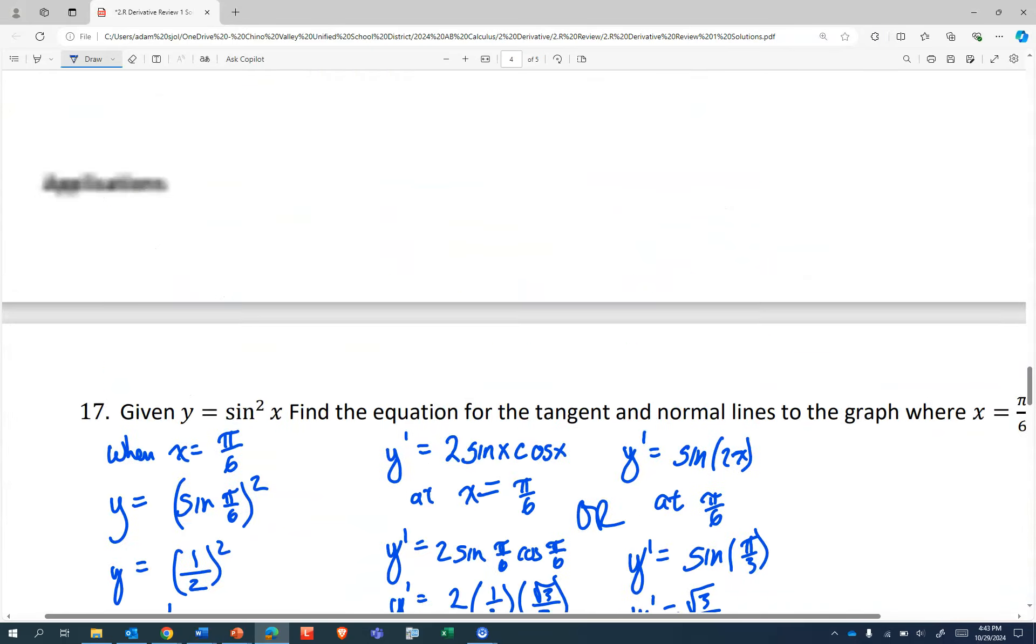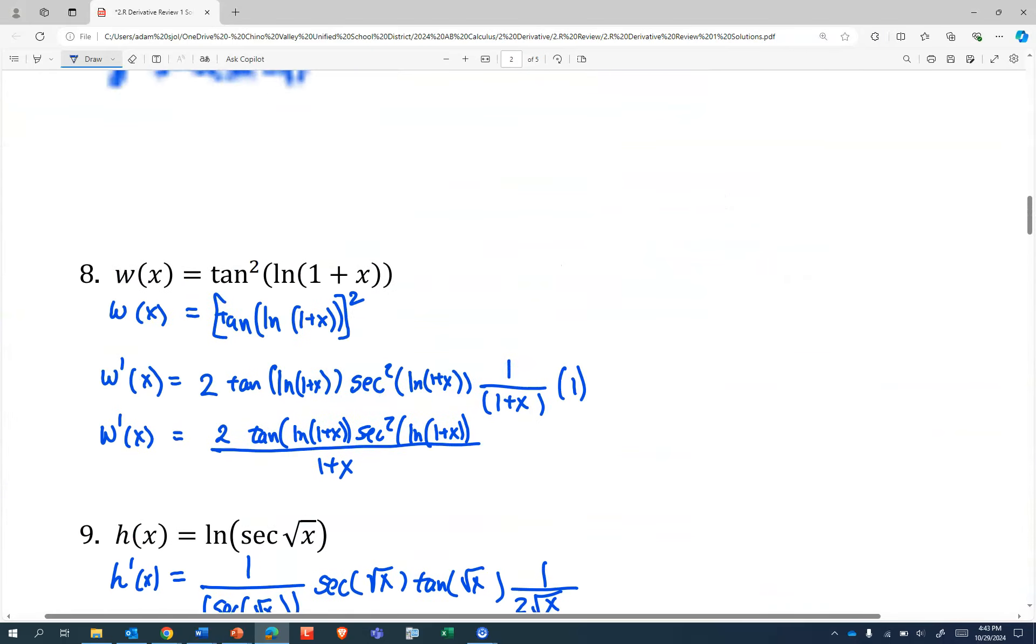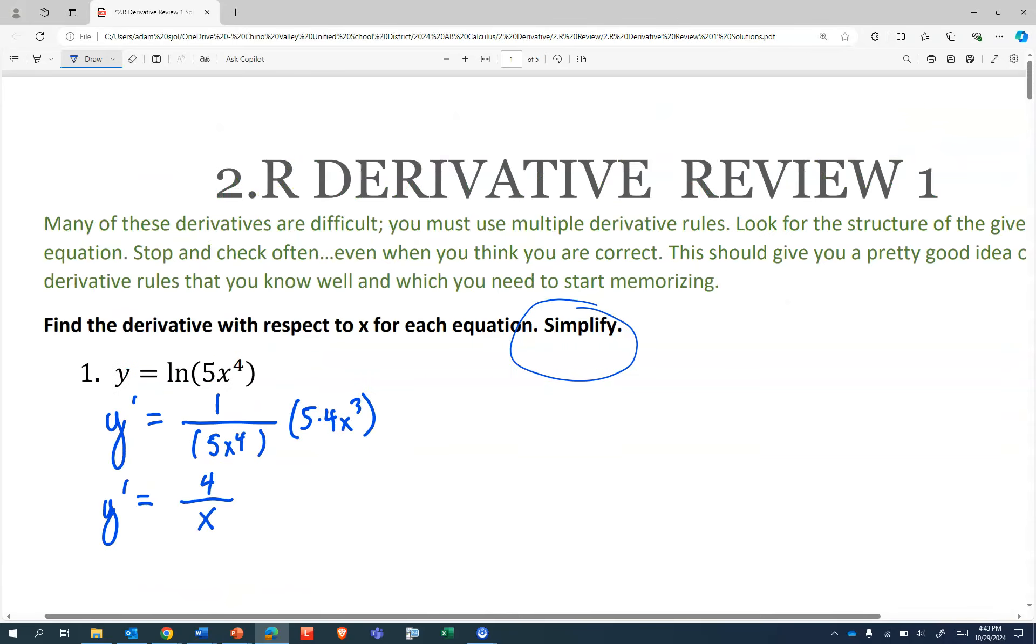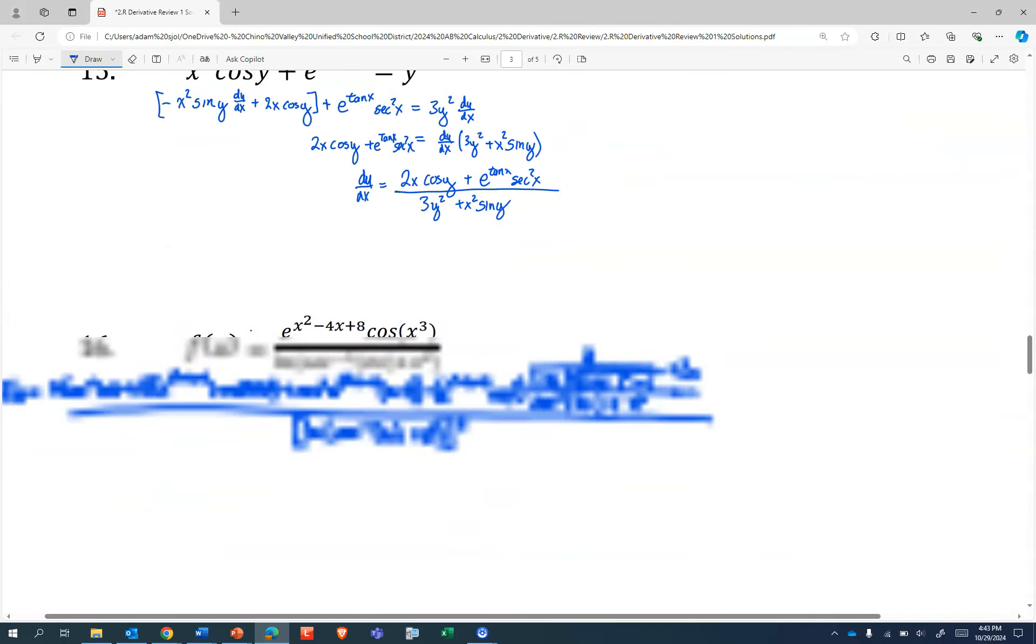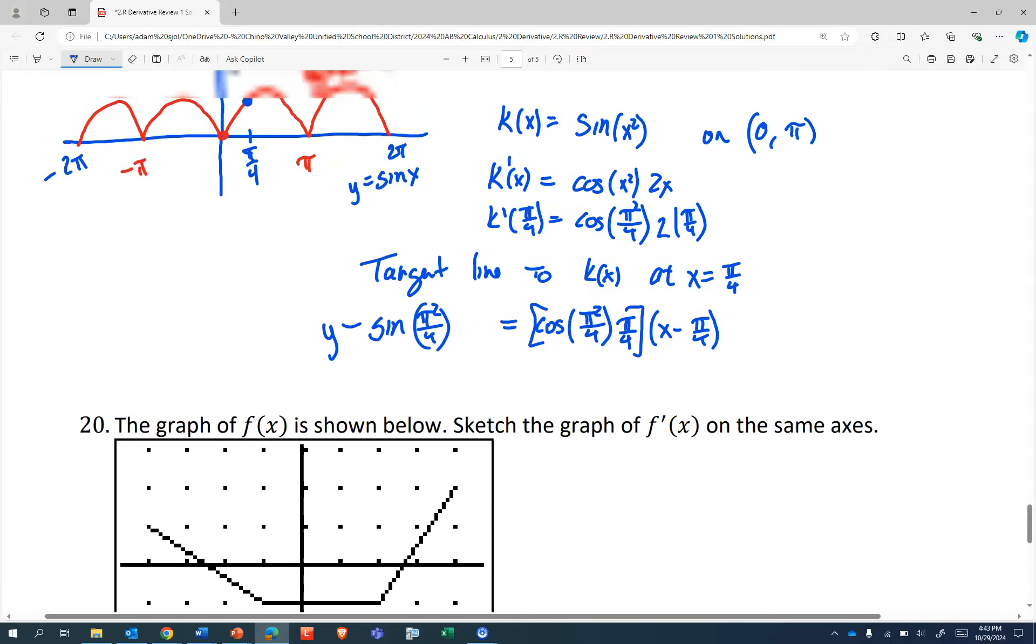I guess we just replace this stuff. And then that's π/2. This whole thing is our slope. Times x minus π/4. And k(x) is sin(x²), so this is just going to be sin(π²/16) as the y value. I really feel like that's a calculator problem.